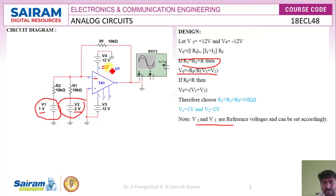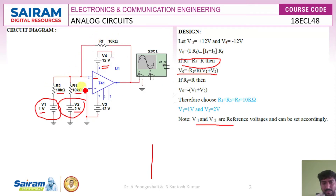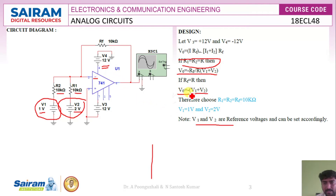V1 and V2 can be any voltages, but they should not exceed the supply voltage. If they exceed the supply voltage, the signal will get chopped off. Since R1 equals R2, both resistors are the same. If the feedback resistance is also the same as R1 and R2, the output equals minus of V1 plus V2 — the output is 180 degrees phase shifted with respect to the input, represented with a negative sign.